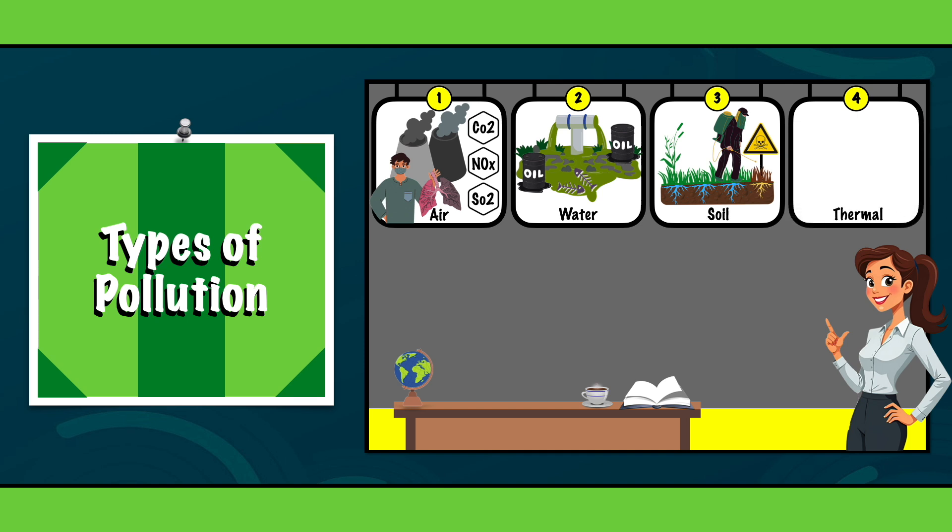4. Thermal pollution. Thermal pollution is a major concern in industrial regions, where heated water is released into rivers and lakes, dramatically reducing oxygen levels. This disruption to aquatic life can lead to large-scale fish kills and damage to biodiversity, particularly in ecosystems that are already under stress.